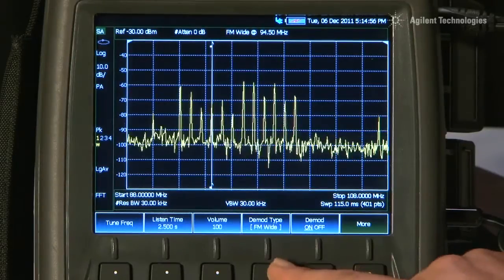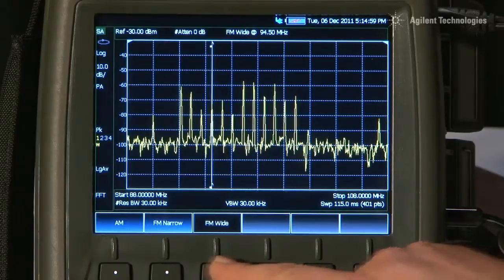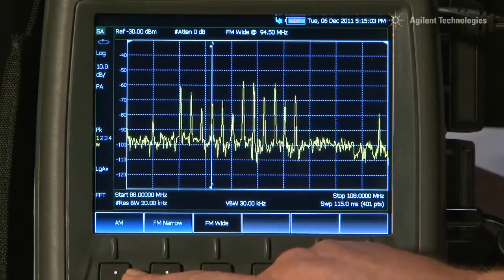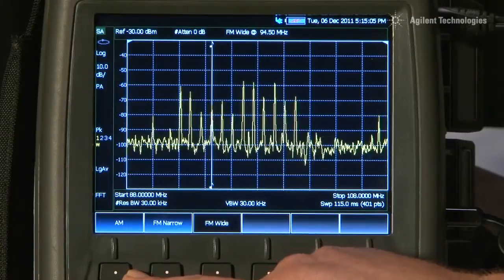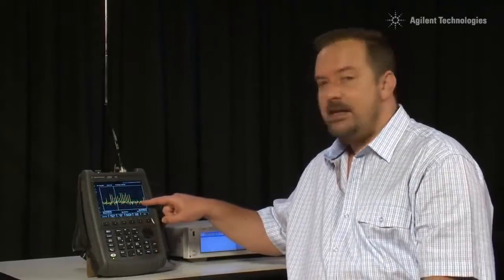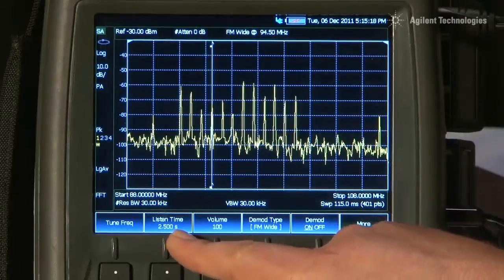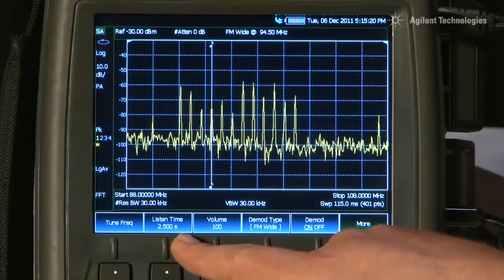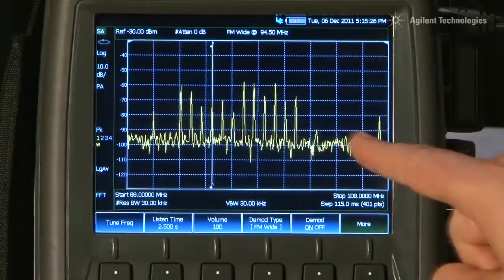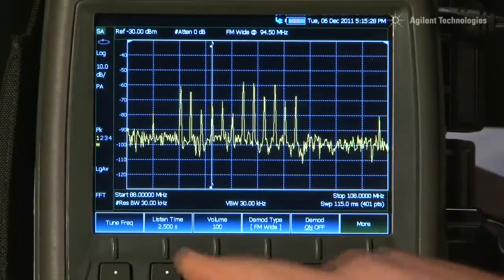The demod types available include FM wide, FM narrow for land mobile radio, and AM for broadcast AM and the air band. The analyzer does a new sweep and then pauses for the listen time, currently set to 2.5 seconds, and during that listen time we can listen to the demodulated audio. The analyzer then re-sweeps to refresh the trace and then demodulates again.